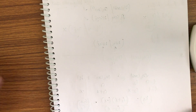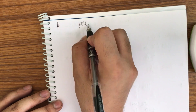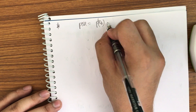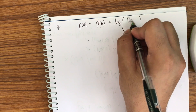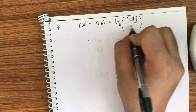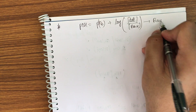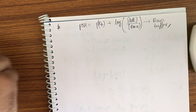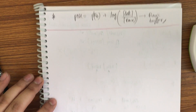For the acidic buffer pH = pKa + log(C_salt / C_acid). For a basic buffer, replace pH with pOH and pKa with pKb: pOH = pKb + log(C_salt / C_base). These are the fundamental buffer formulas.